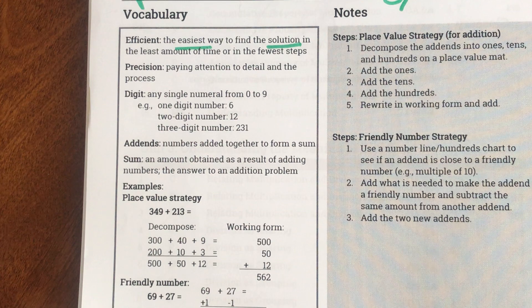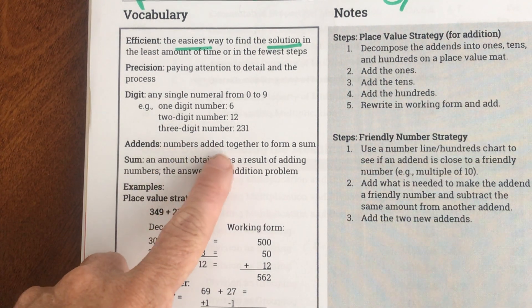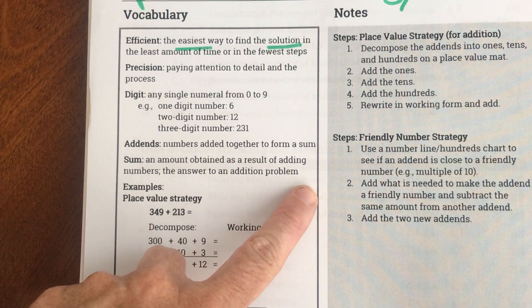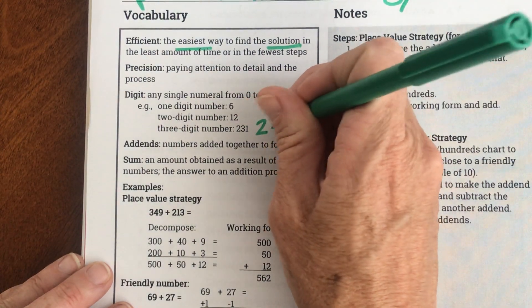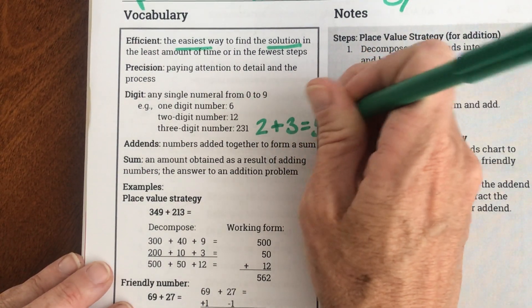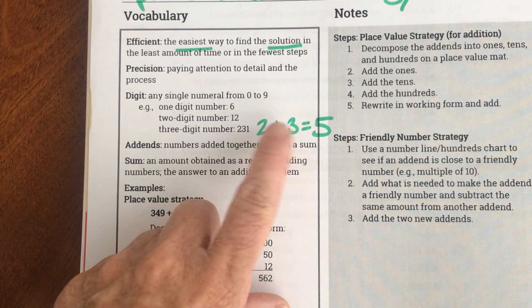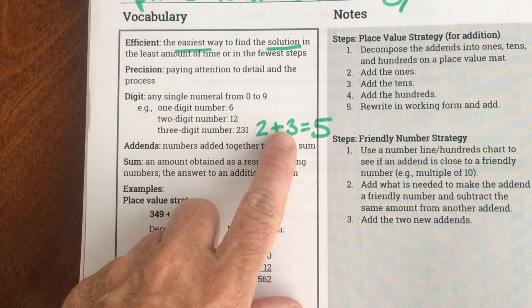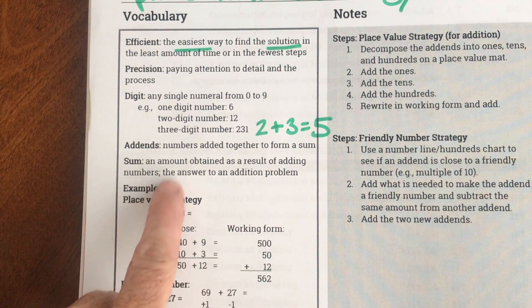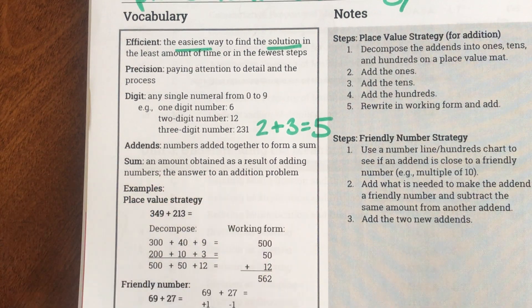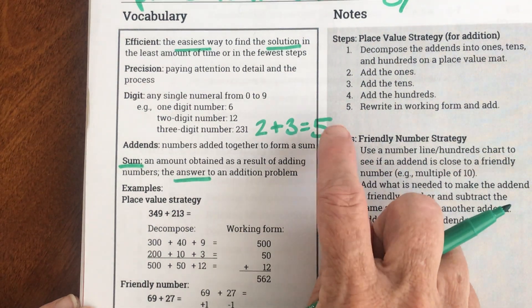Now since our lesson is on adding, we're going to learn two addition words. So addends are the numbers added together to form a sum. So if my number was, we're going to do a really easy one, 2 + 3 = 5, and notice it's in green so you should write that. Your addends are the two and the three. They're the numbers I'm adding together. The sum is an amount obtained as a result of adding numbers. It's the answer to an addition problem. So sum means answer. So my answer or my sum would be five.